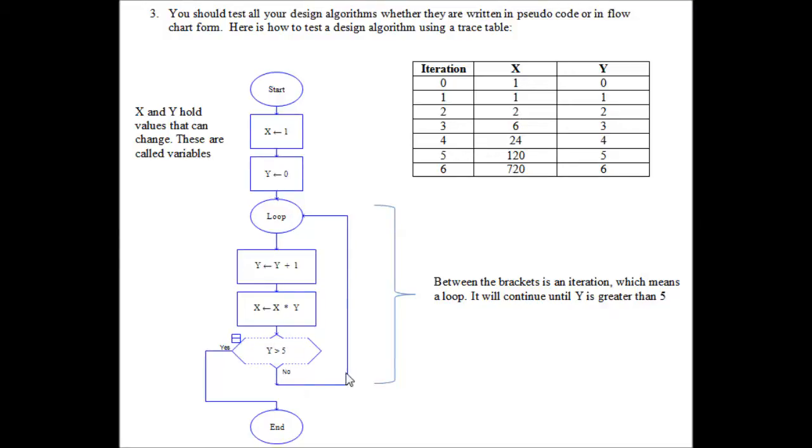And Y is still not equal to 5, so we go round the loop again. And again we add 1 to Y, making it 3 on iteration 3.